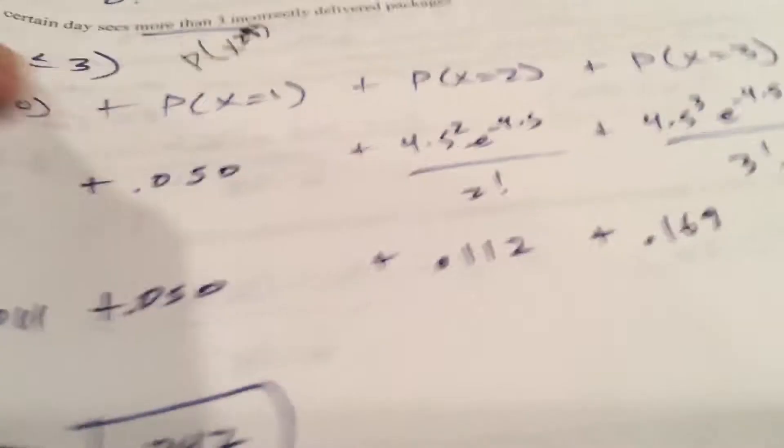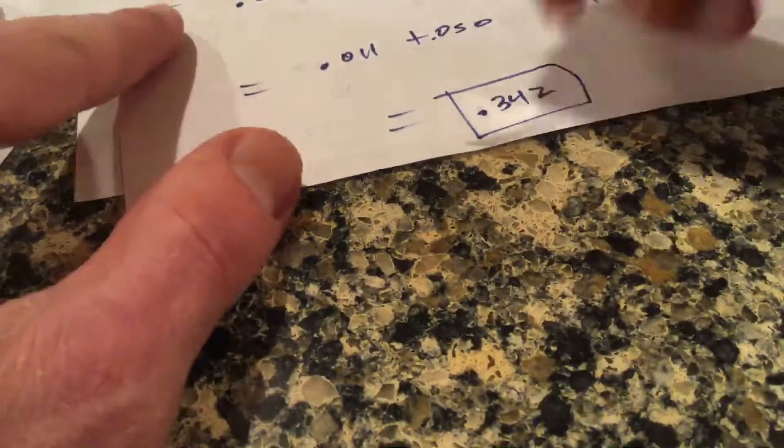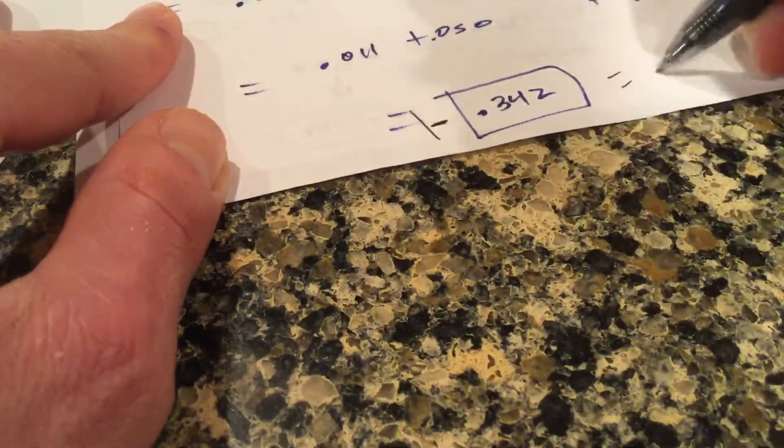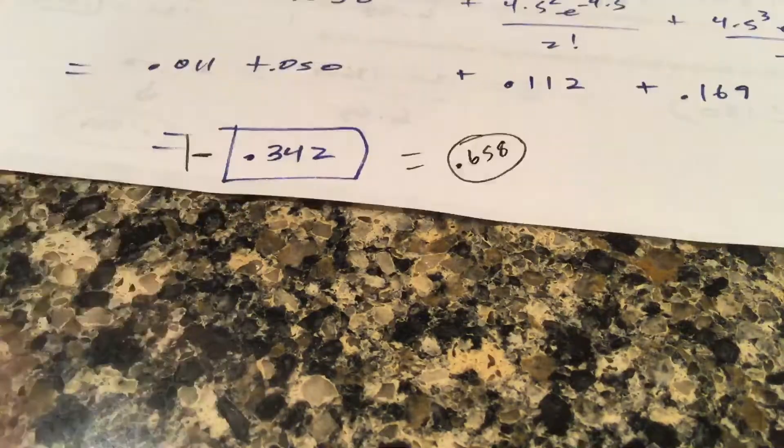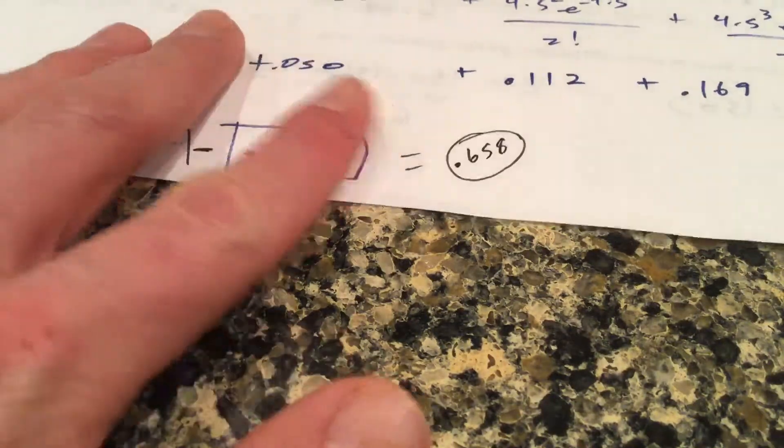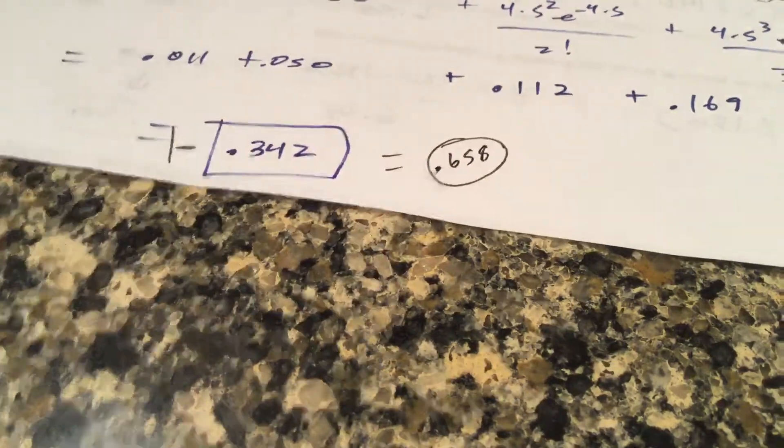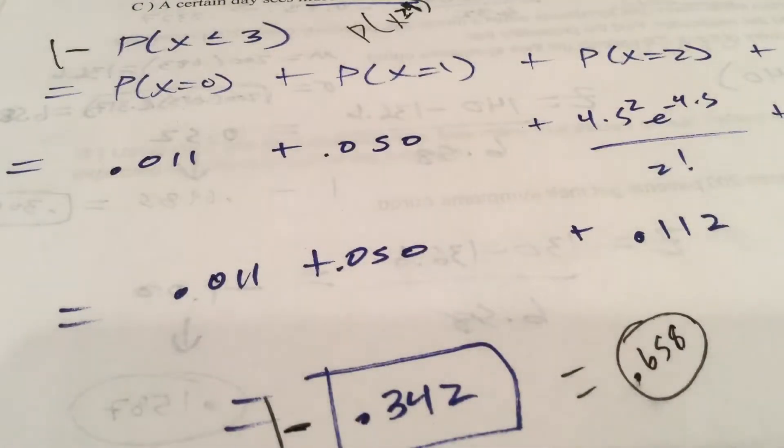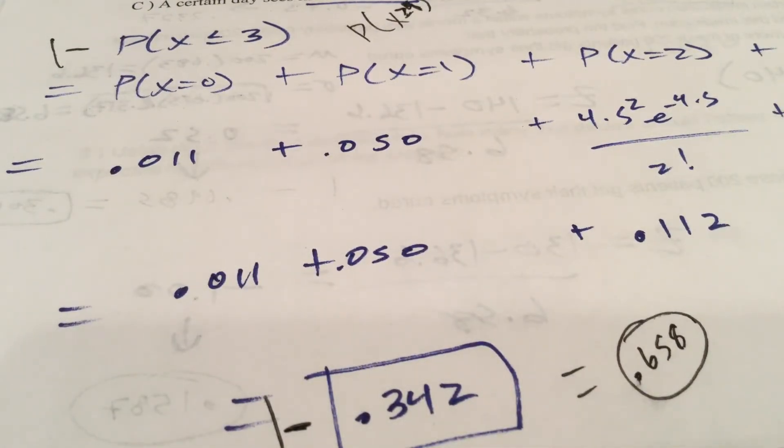And I just made a boo-boo. Instead of keeping that answer, we need to do one minus that answer, and 0.658. Alright, so my bad on that one, that is the correct answer there. Alright, that is your video. Homework's due tomorrow, quiz is still on Thursday, we're going to be in good shape. Yak Math Video signing out.